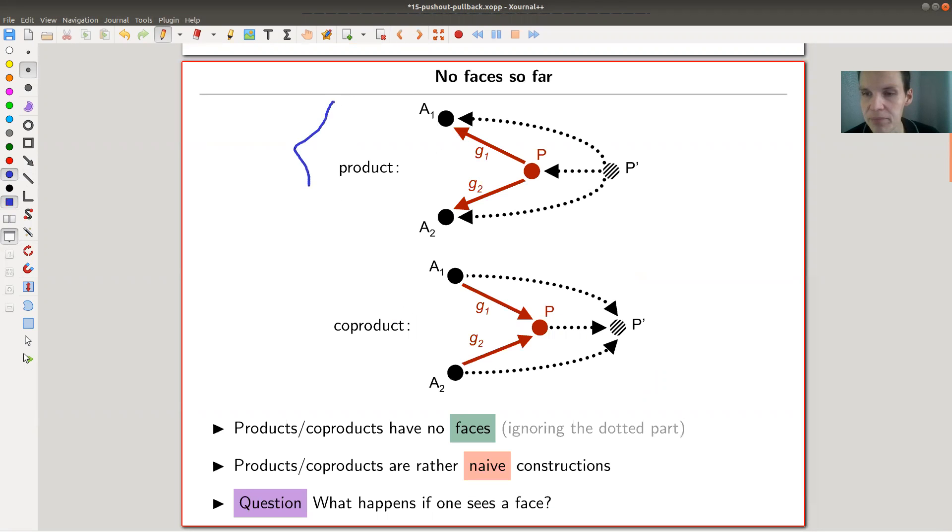We had products and coproducts, which were those kind of objects together with the arrows here in the middle and this part here. They were uniquely determined by a universal property, uniquely determining a certain arrow either incoming or outgoing. The idea was that these are completely determined by what happens on the left and what happens on the right. My story for today is that these things don't have any faces. The universal part is this dotted part you'd like to ignore.